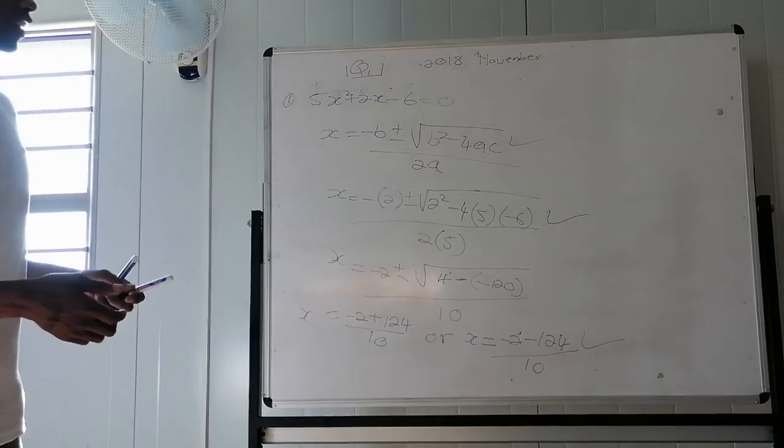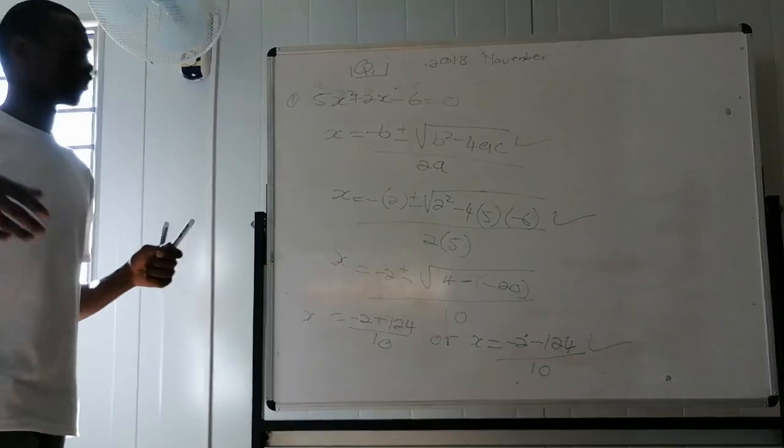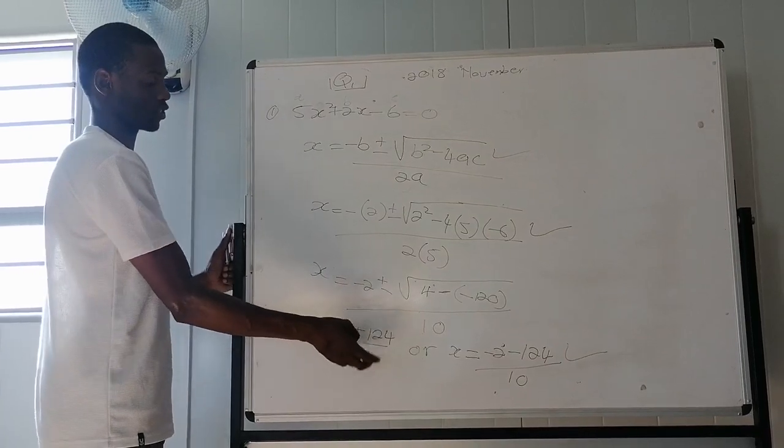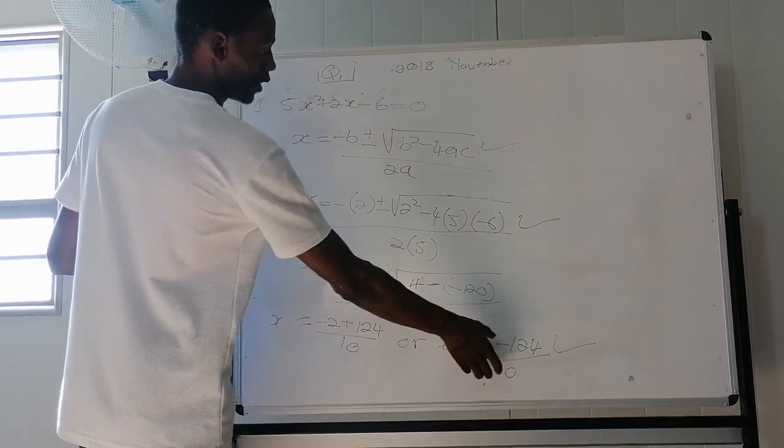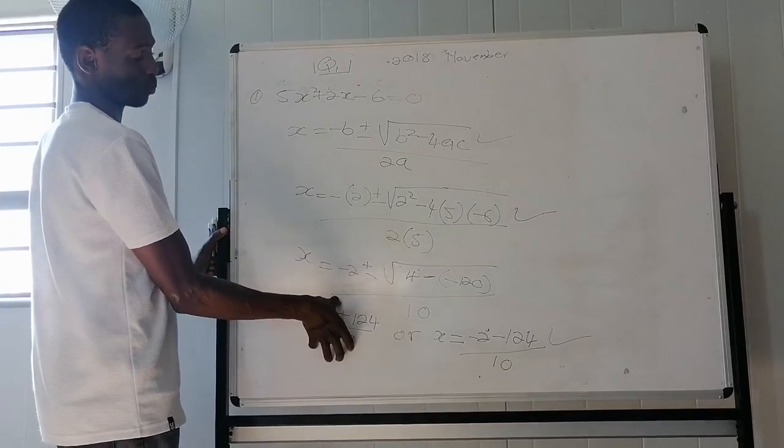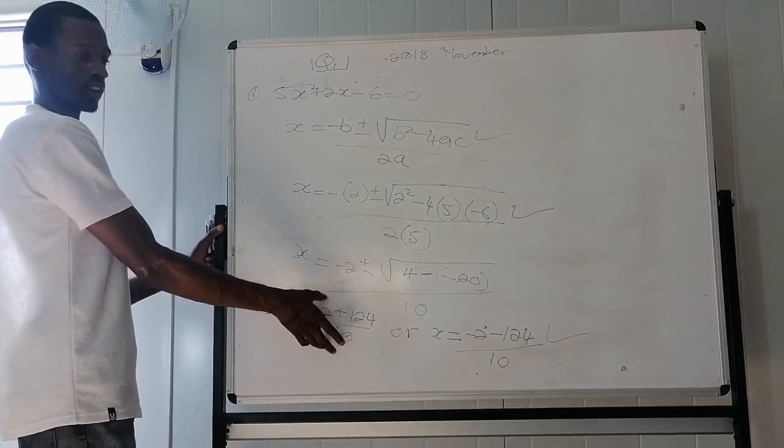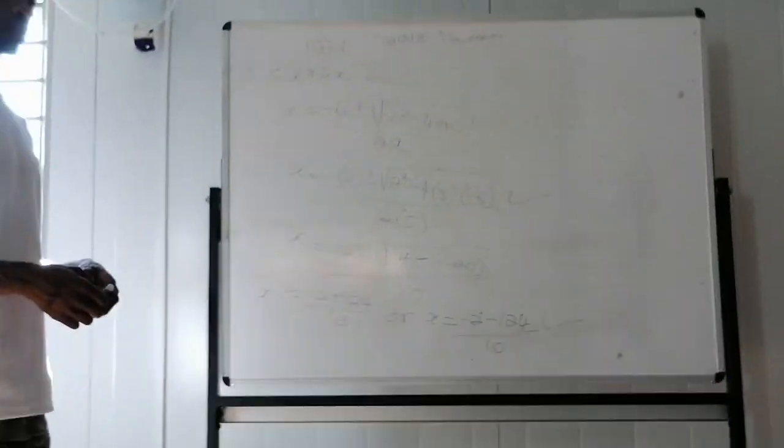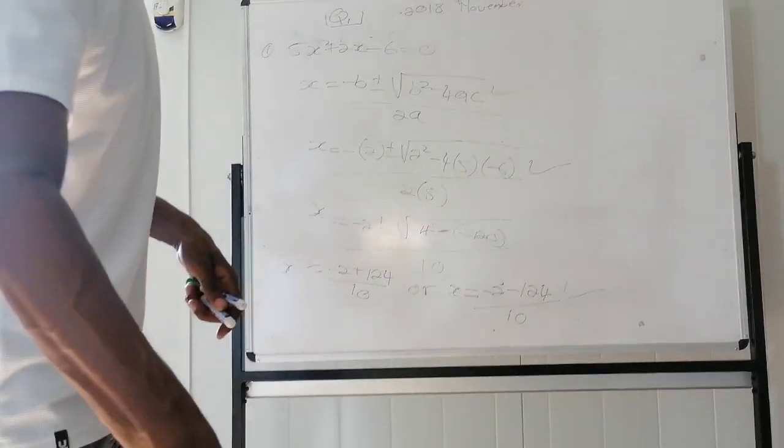But if you don't have a calculator, we are using that word, you can do it step by step. Then from here, you can just punch your calculator, you will get an answer. Because they say into two decimal places, you just have to punch this in your calculator and you will get an answer, and punch this in your calculator, then you can also get an answer.